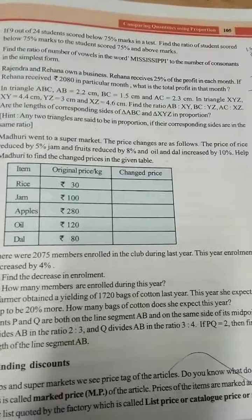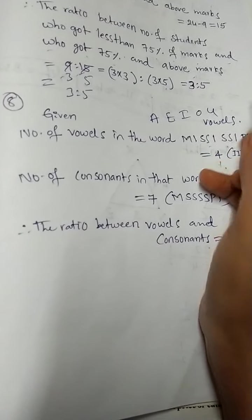Actually, vowels means what? A, E, I, O, U. A, E, I, O, U, we can call our vowels, right? Remaining all are consonants.